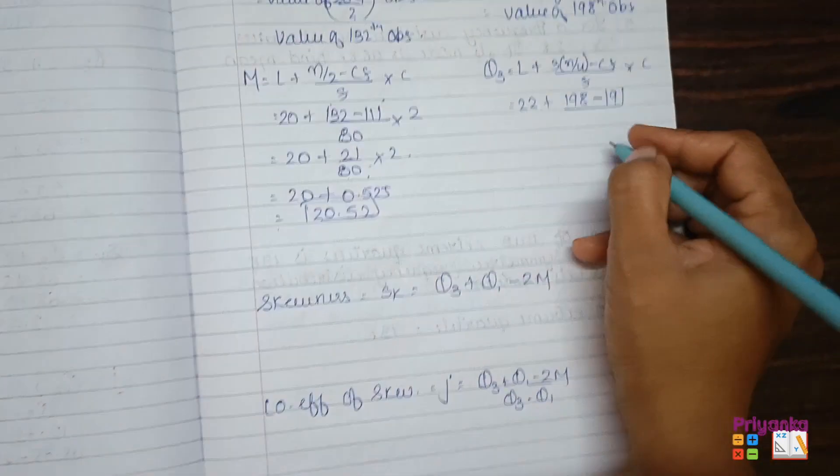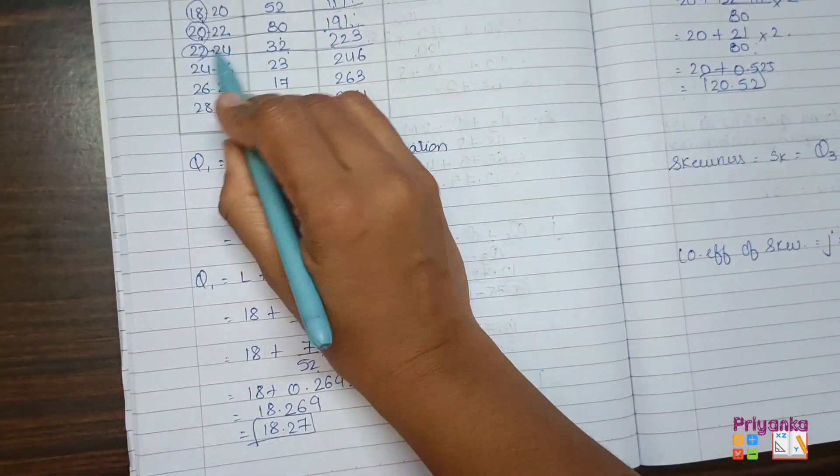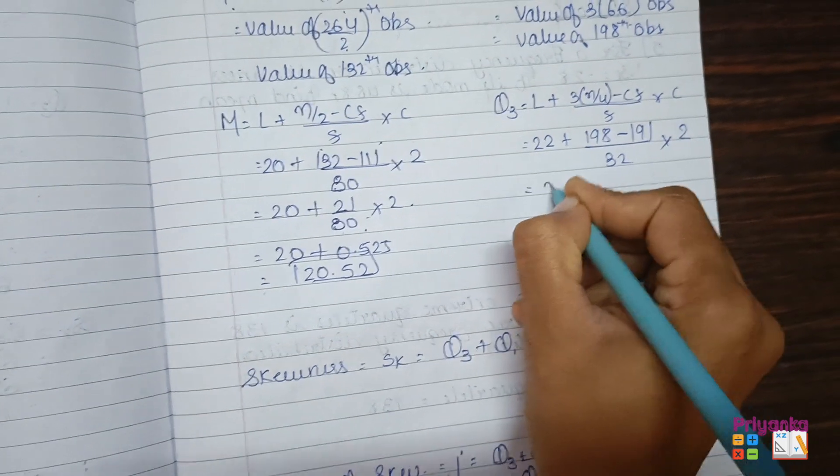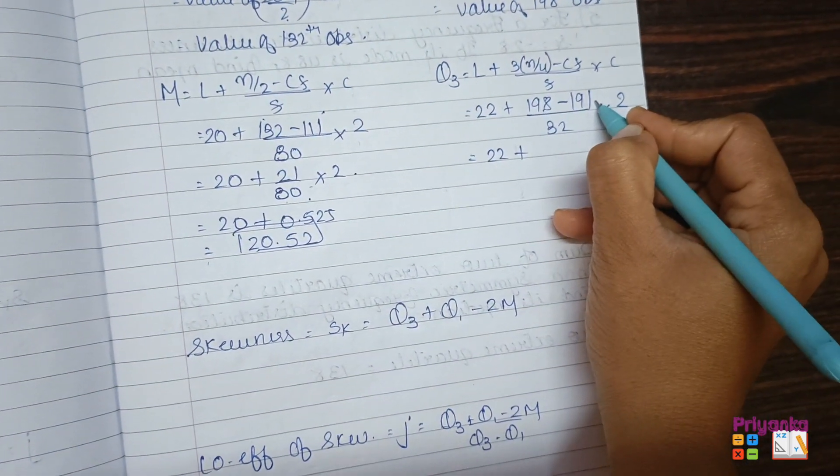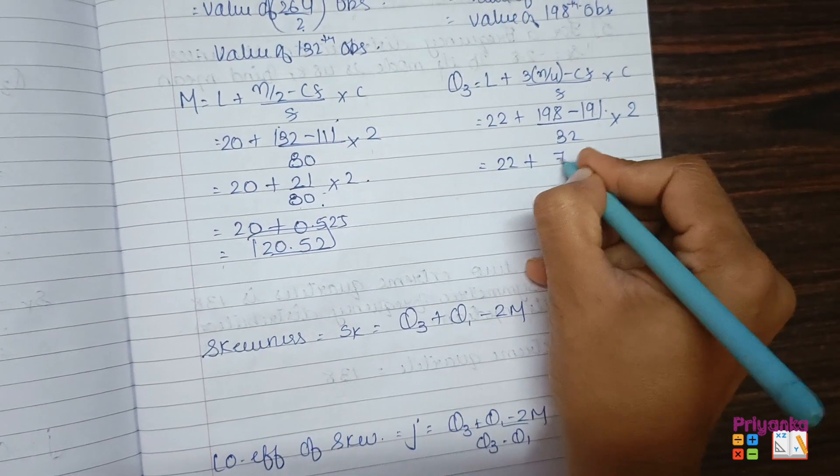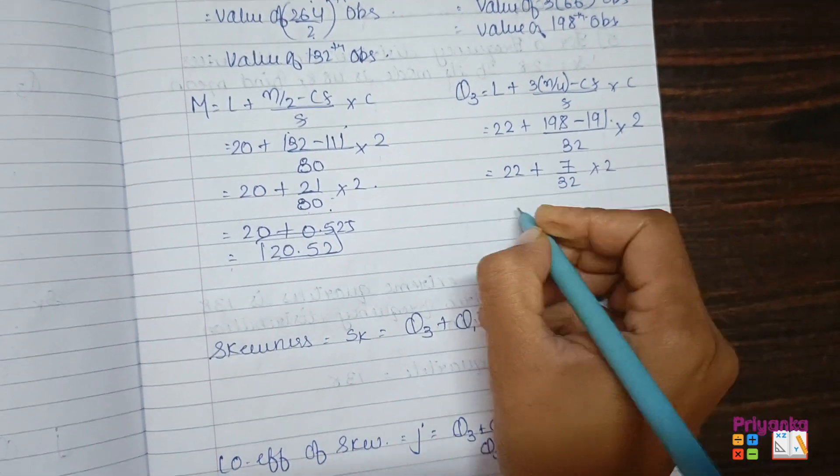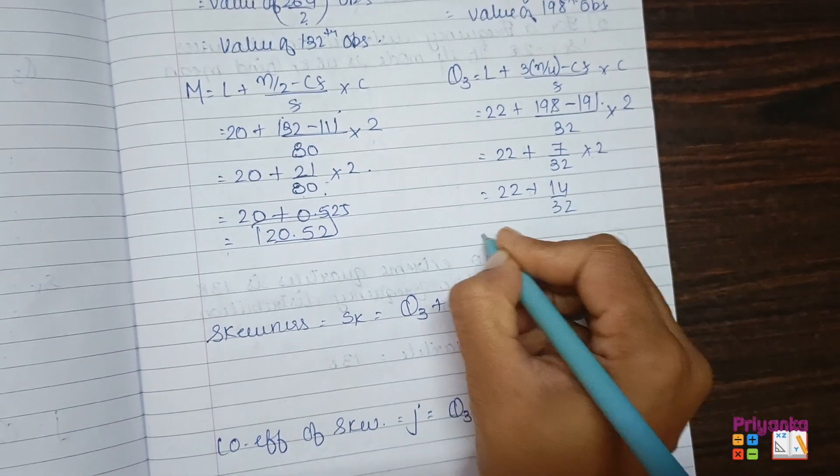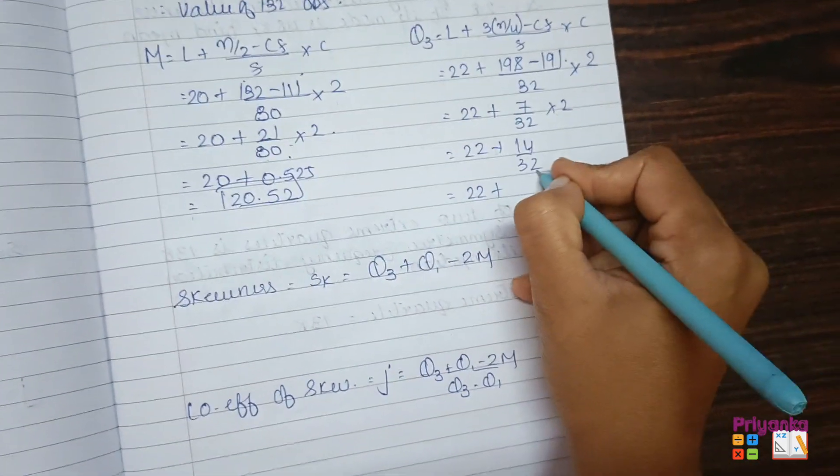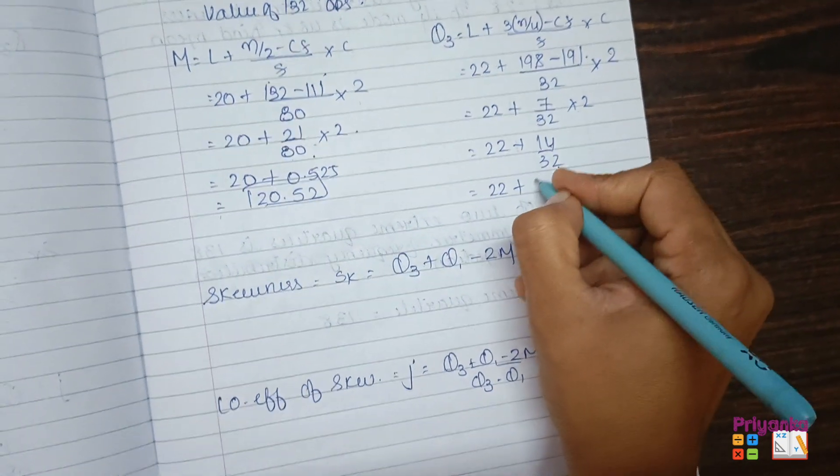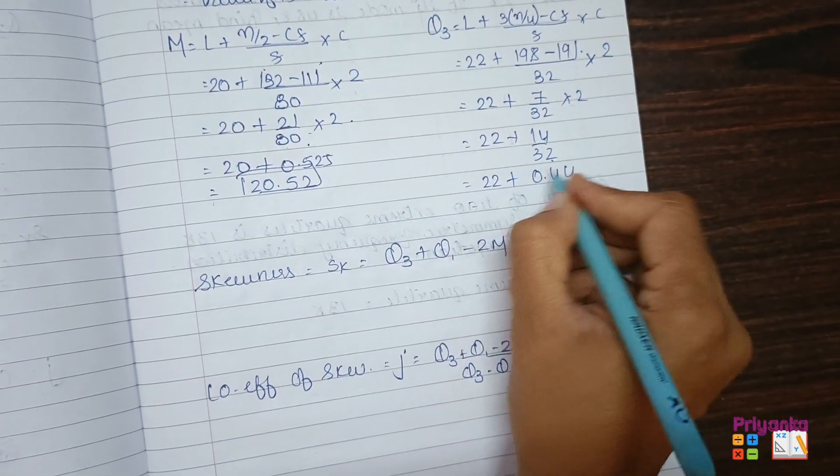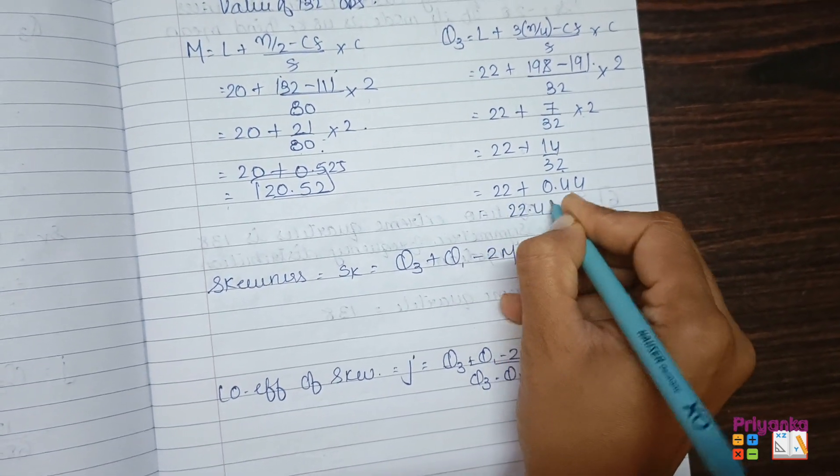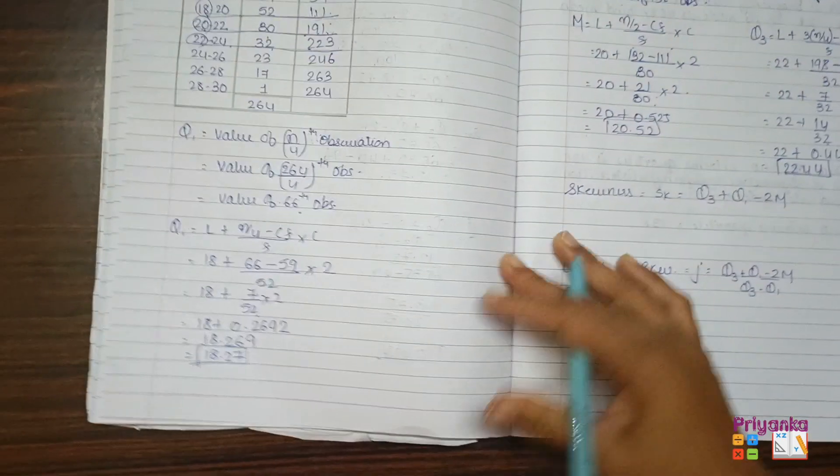Frequency will be 32, class length 22 minus 24 will be 2. So 22 plus 198 minus 191 will be 7 divided by 32 into 2. 7 into 2, 14 divided by 32. 22 plus 14 divided by 32, you will get 0.44. By adding these two, you will get 22.44. So here we are ready with the Q1, median, and Q3.